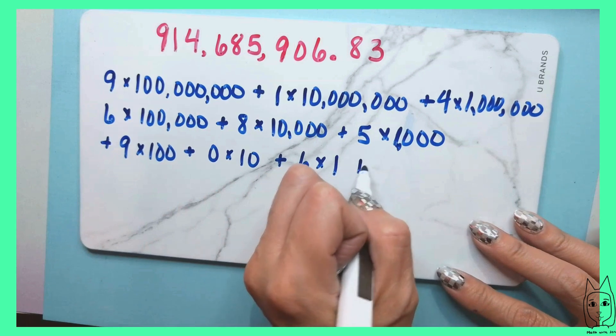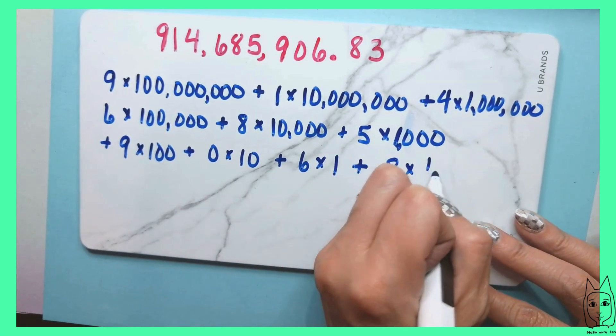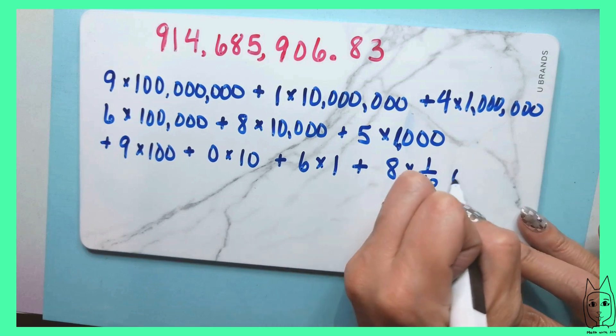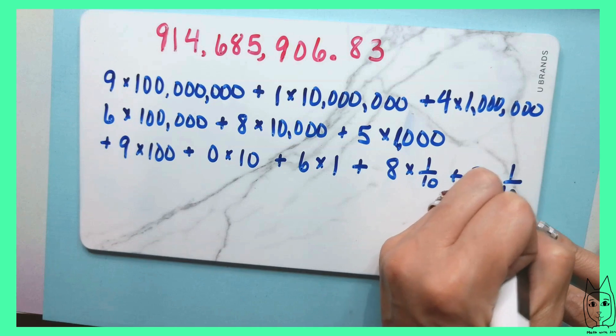And then now we have our eight tenths, so 8 times one tenth. And then we have three hundredths, so 3 times one over a hundred.